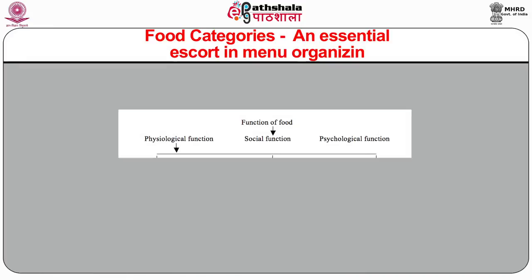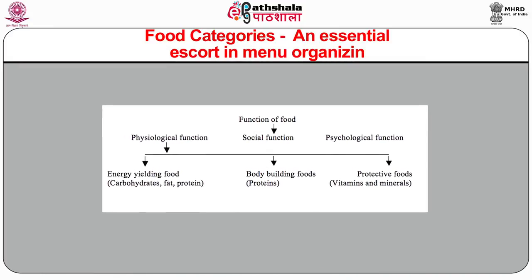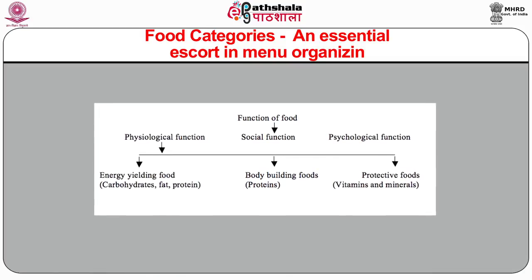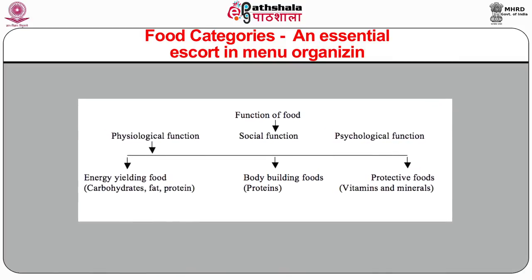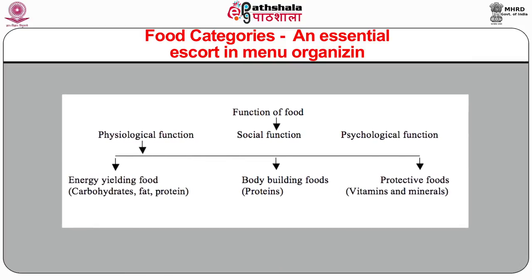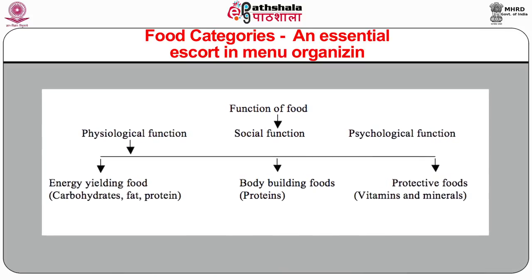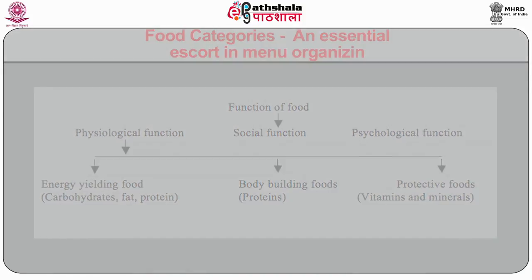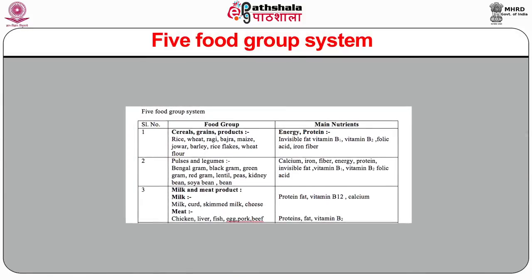Food is sub-categorized on the basis of its function in the body. The functions of food include physiological function, social function, and psychological function. In physiological function, energy-yielding food contains carbohydrates, fats and proteins. Body-building foods contain proteins. Protective foods contain vitamins and minerals.